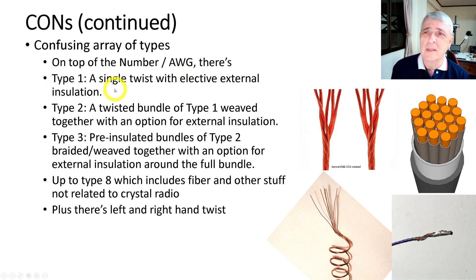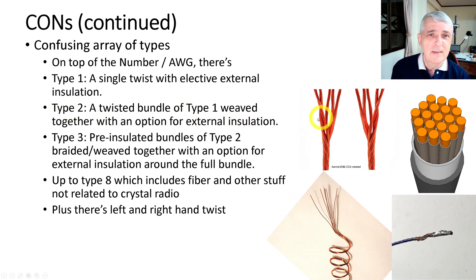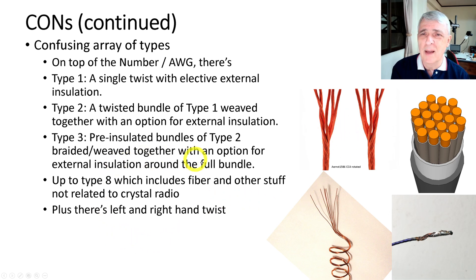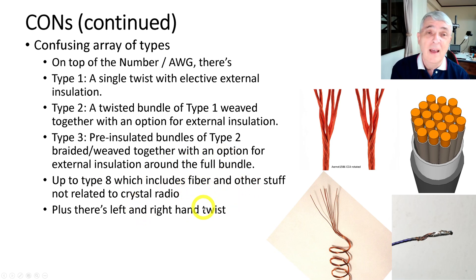There's also a confusing number of array types on top of the strand count and wire gauge. Type 1 is a single twist; Type 2 is a twisted bundle of Type 1 wires woven together; Type 3 is pre-assembled bundles of Type 2 wire braided together — and it goes up to Type 8, which includes fiber and other materials not relevant to crystal radio. On top of that, there's left-hand and right-hand twist, which you cannot mix unless you do so intentionally.